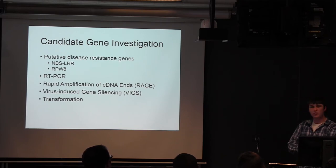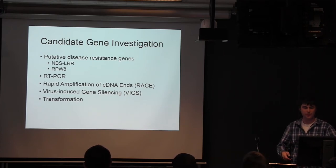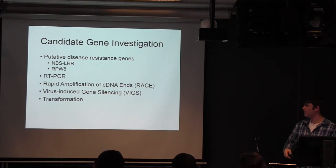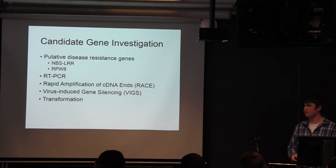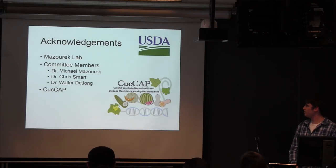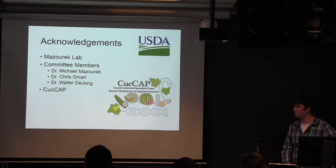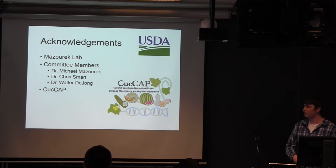Once we're more confident that one of these two genes is our best candidate, we're thinking about moving forward with either virus-induced gene silencing to knock out expression in the resistant plant and bring it down to a susceptible level, or possibly using transformation techniques as ultimate confirmation that our candidate gene is in fact the causal gene. I'd like to thank the members of the Zurich lab, especially Paige Reeves, my committee members, and my funding through QCAP, which has allowed me to dig into many different diseases important to the cucurbit community.